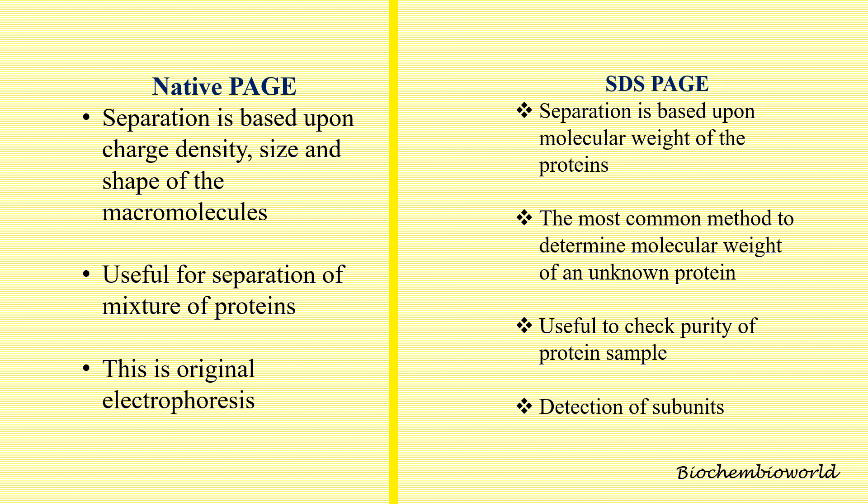Native PAGE is used for the separation of mixtures of proteins, but also for nucleic acids. For example, when you have a PCR product of approximately 100 to 200 base pairs, rather than going for agarose gel electrophoresis to resolve that PCR product, we usually tend to go towards native PAGE, because the crisp differences in the number of nucleotides are much more clearly resolved in native PAGE compared to agarose gel electrophoresis.